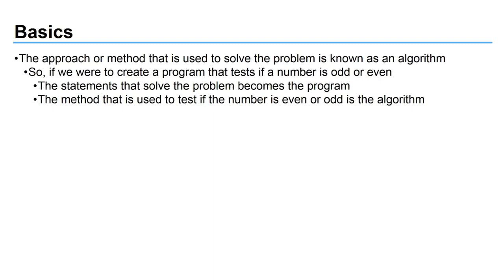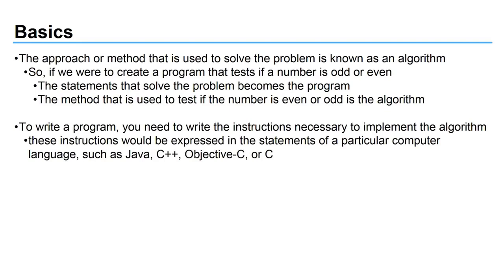We'll discuss the concept of algorithms more when we talk about the details of C. I want you to understand what you're doing when you're writing code. At the very lowest layer, you're going to write these algorithms that are contained inside of a program. To write a program, you're going to need to properly write the instructions to implement the algorithm. These instructions can be expressed in statements of a particular programming language.